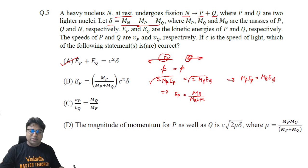This is the fraction we will receive of the total liberated energy. So this should be correct. Therefore, option B is incorrect because we're having mass of P in the numerator.